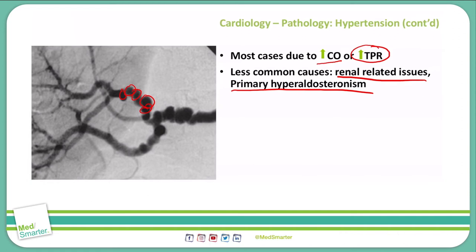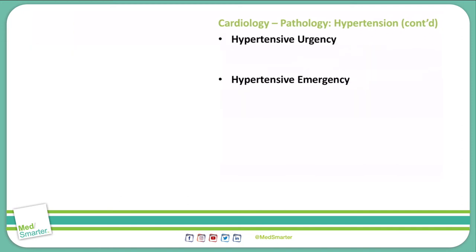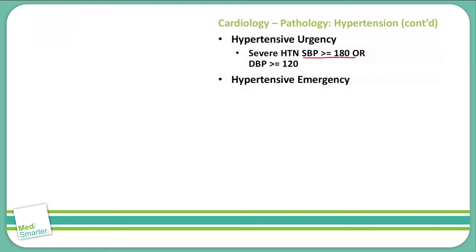When hypertension gets to a point where it is too high, we call that a hypertensive urgency or a hypertensive emergency. These two are distinguished by one specific thing. Hypertensive urgency has a severe hypertension with a systolic blood pressure greater than or equal to 180 mmHg or a diastolic blood pressure greater than or equal to 120 mmHg. As with hypertension, both do not need to be present for the diagnosis. Someone with a blood pressure of 190 over 100 would be considered to have a hypertensive urgency due to that systolic blood pressure of greater than or equal to 180.